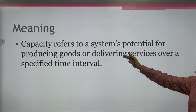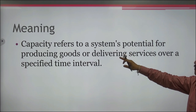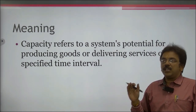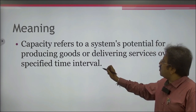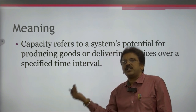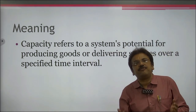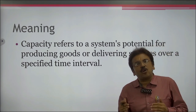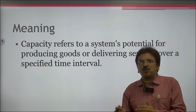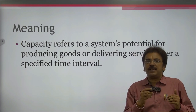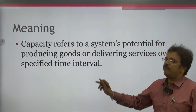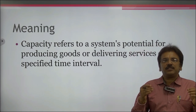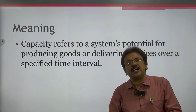Capacity refers to a system's potential for producing goods or delivering services over a specified interval of time — from the start of a process to its end. For example, if you are producing a pen, you consider what raw materials are required, at what time they are processed, and when the final product comes to market. This is all about the capacity of a specific unit: how many pens it can manufacture in a specified period of time.